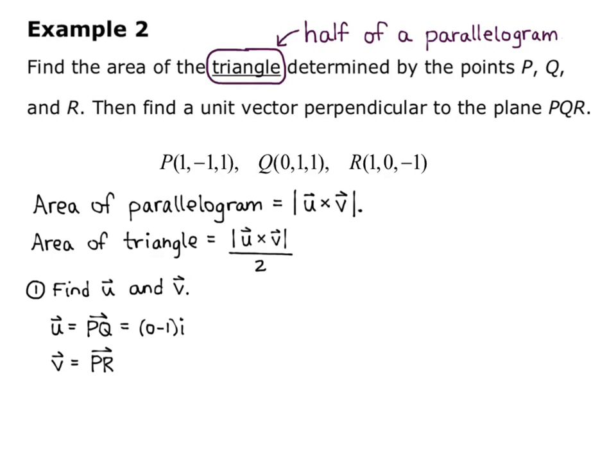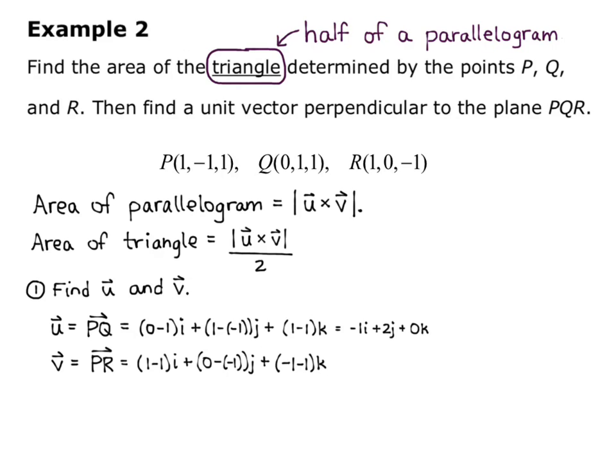PQ equals (0-1)i + (1-(-1))j + (1-1)k, which gives us u = -i + 2j + 0k. PR equals (1-1)i + (0-(-1))j + (-1-1)k, which simplifies to v = 0i + 1j - 2k.